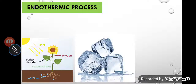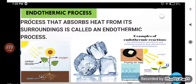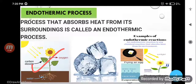Endothermic is just the opposite of exothermic reaction. What is endothermic? The process that absorbs heat from its surroundings is called an endothermic process — the process in which energy is absorbed. Here the example given is photosynthesis. Plants make their food only in the presence of sunlight by taking heat from the sunlight. So plants get energy from the sun in the form of light and heat, therefore it is an example of an endothermic process.